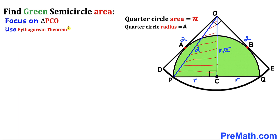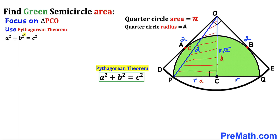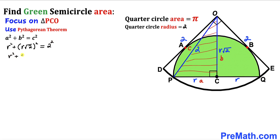Applying the Pythagorean theorem to triangle PCO: a² + b² = c². Here a = r and b = r√2, so r² + (r√2)² = 2². Simplifying: r² + 2r² = 4, giving 3r² = 4. Dividing both sides by 3, our r² value turns out to be 4/3.